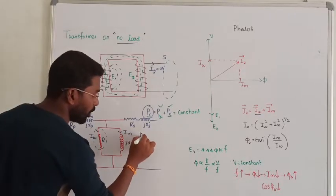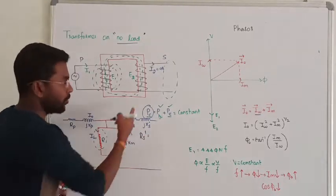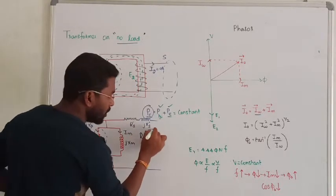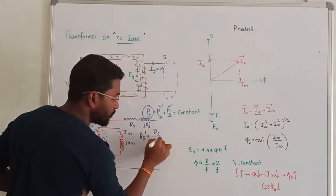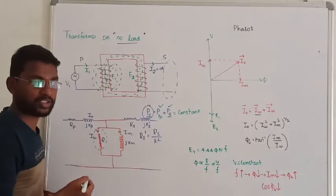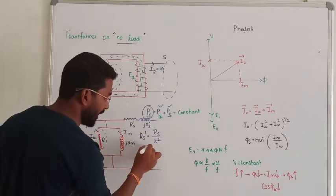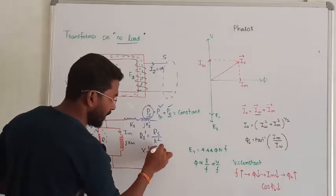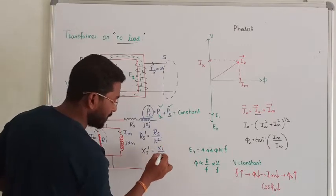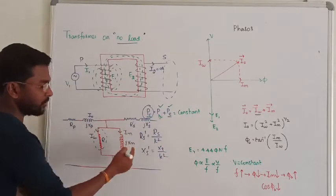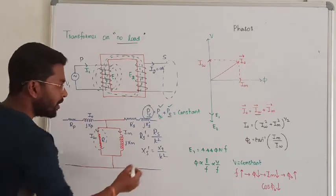To draw the electrical equivalent circuit, you divide the secondary resistance by k-squared — that is, the square of the turns ratio. Similarly, reactance is also divided by k-squared. That is how we transform secondary quantities to the primary side, giving us xs-prime and rs-prime.